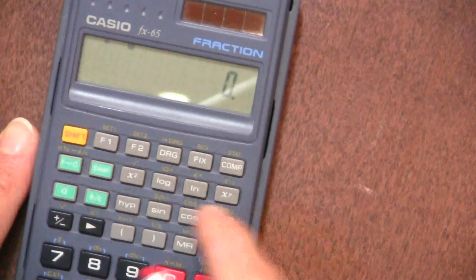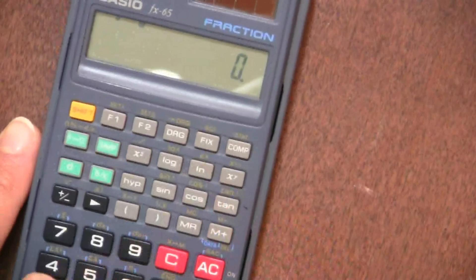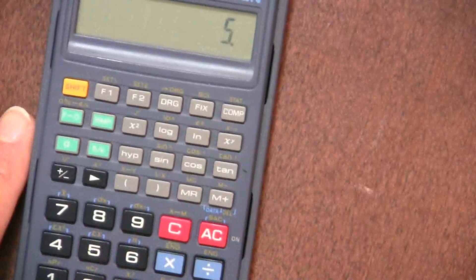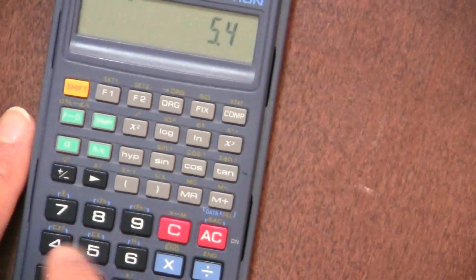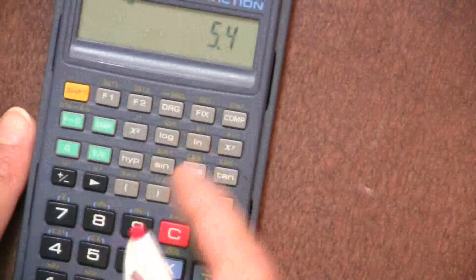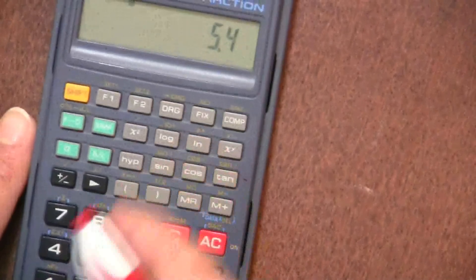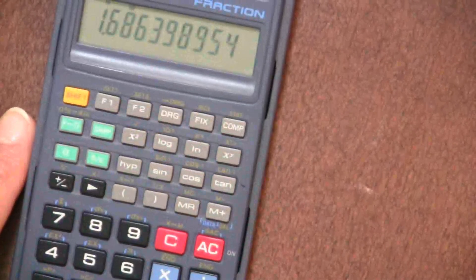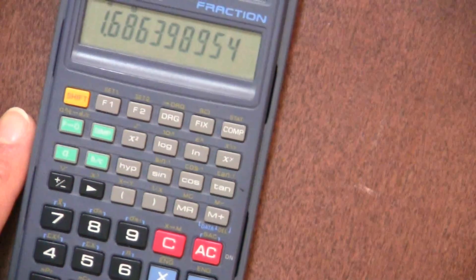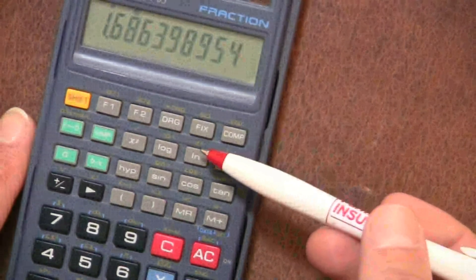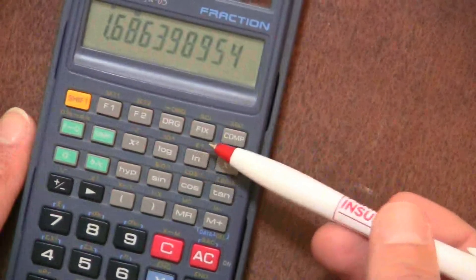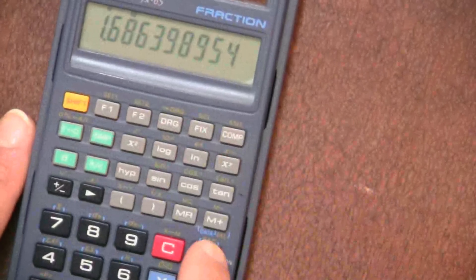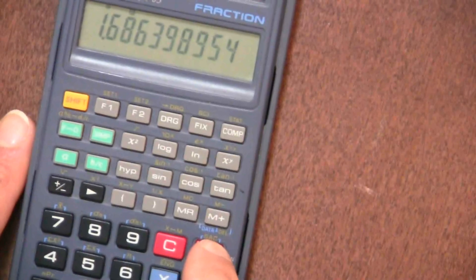Same sort of thing with the natural log. So then you put in the number first on this kind of a calculator. You put in the number first. So say you want 5.4, the natural log of 5.4. You put in the number first, then you press the natural log, and it gives you the natural log of 5.4. And then the opposite of the natural log is e to the x. When we get to those, we'll talk about those functions again.